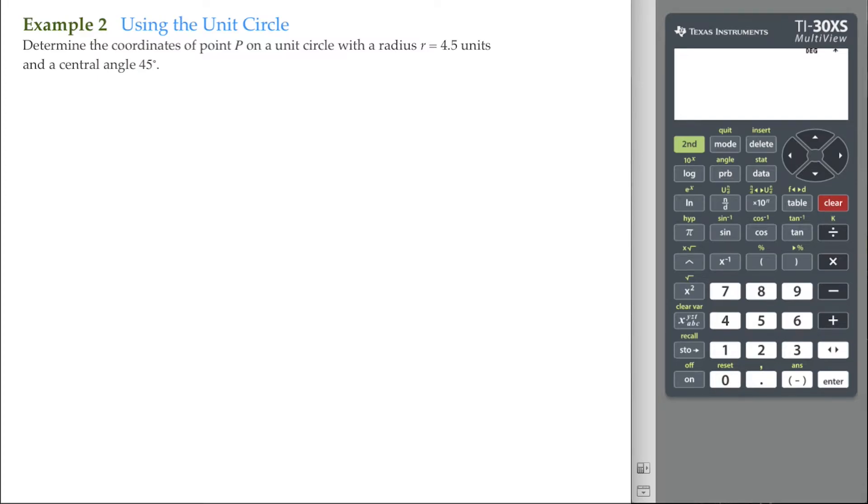This example is determining the coordinates of point P on a unit circle with a radius of 4.5 units and a central angle of 45 degrees. A couple of things I want to point out: we have a radius of 4.5 units and a central angle of 45 degrees.